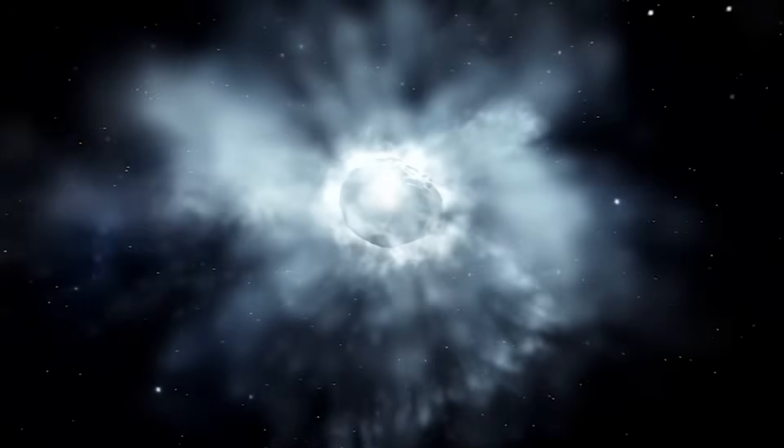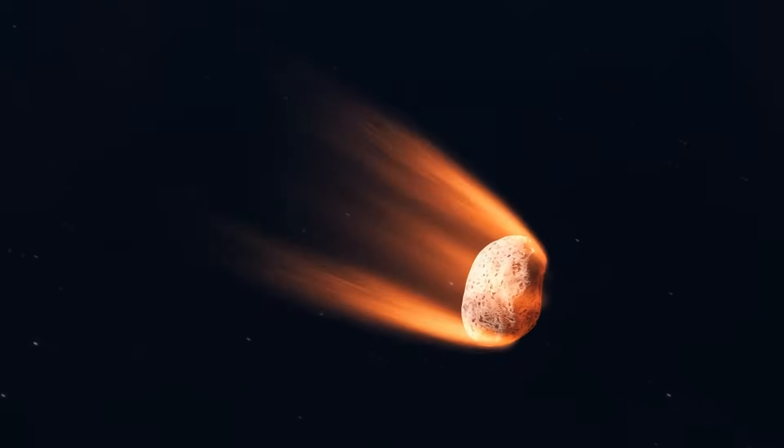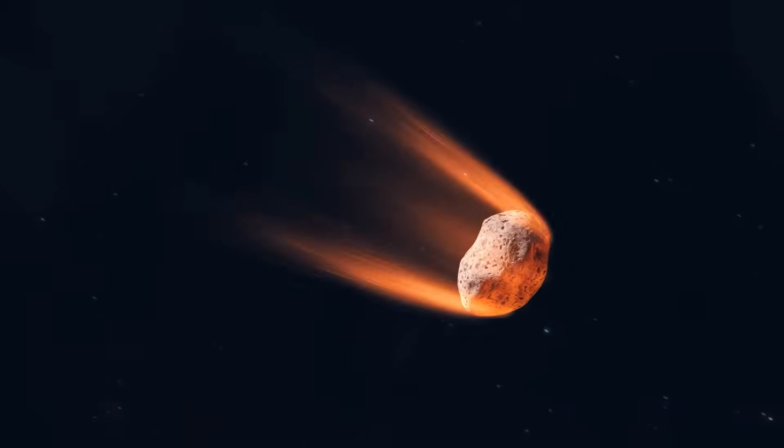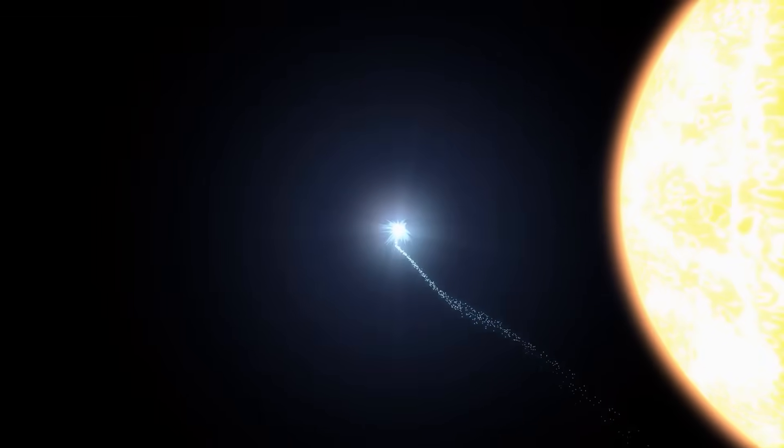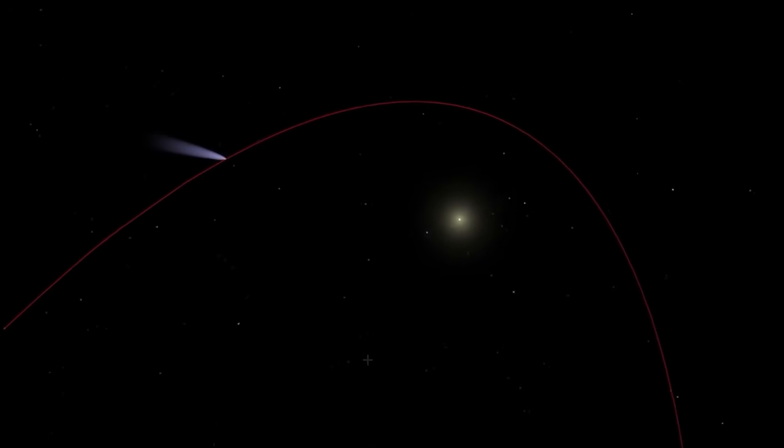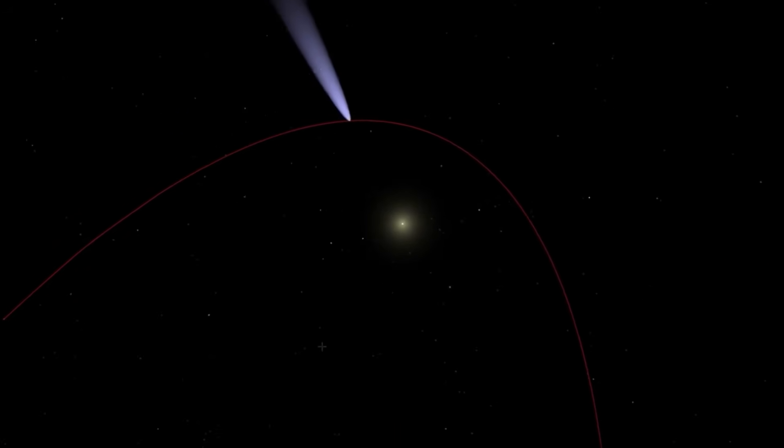Comets are essentially dirty snowballs. They only start to turn on, releasing gas and dust to form their iconic coma and tail, when they get close enough to the sun for its heat to sublimate their ices. This usually happens somewhere inside the orbit of Jupiter. But 3i Atlas was already glowing, already active, while it was still far out in the frozen depths of space.